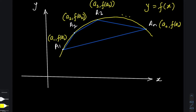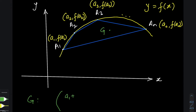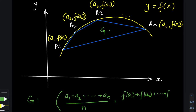We continue until we reach aₙ, whose coordinates are (aₙ, f(aₙ)). Now let us focus on a point G, which is the center of mass of this polygon. The x-coordinate of G is the arithmetic mean of the x-coordinates of the vertices, and the y-coordinate of G is the arithmetic mean of the y-coordinates of all the points a₁, a₂, a₃, ... aₙ making the polygon.